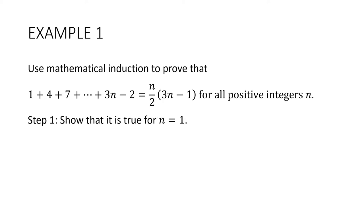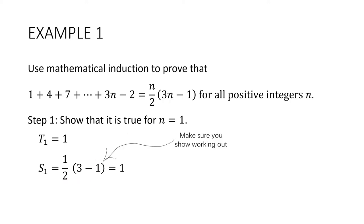Let's start by showing that this statement is true for n equals 1. Our first term is 1 — we can see it first in the series, or substitute 1 in. And the sum of the first term, putting 1 in, I get a half multiplied by 3 minus 1, which is equal to 1. It's really important that you show your working out — this step is worth one mark. If you just say first term equals 1 and sum of first term equals 1, you won't get that mark. Therefore, it is true for n equals 1.